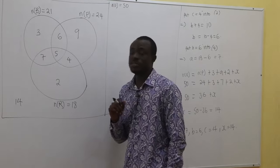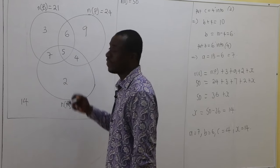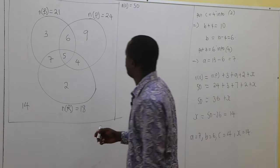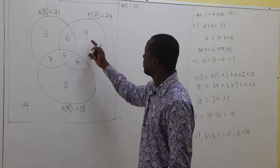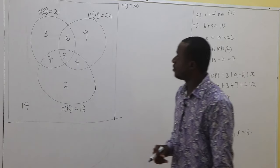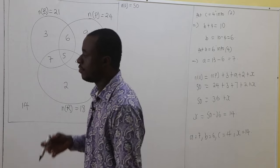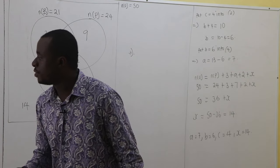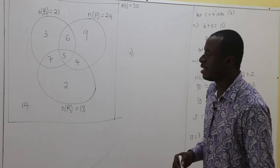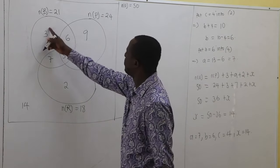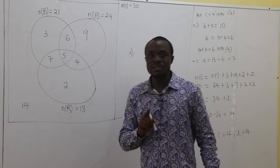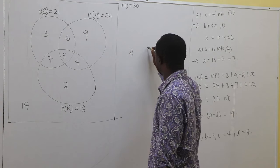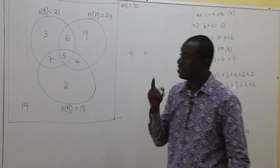Now the first question says to use the Venn diagram to find the number of officers who chose plantain and beans only. Plantain and beans only means P intersection B only — they don't want anything from rice. Clearly, the answer is 6.